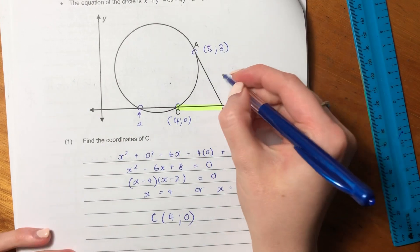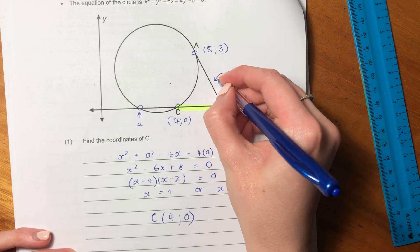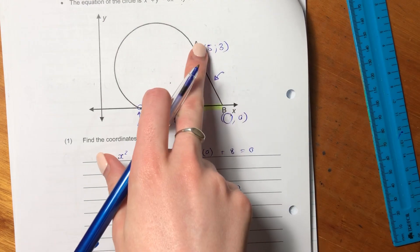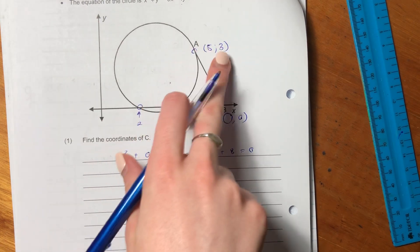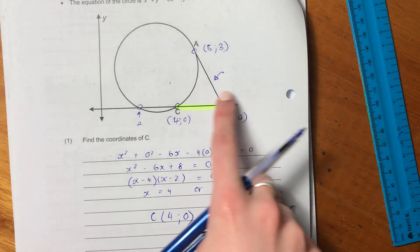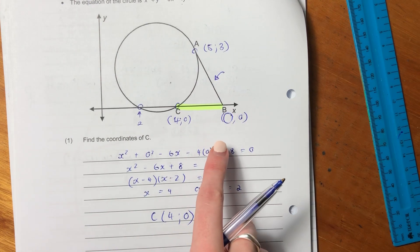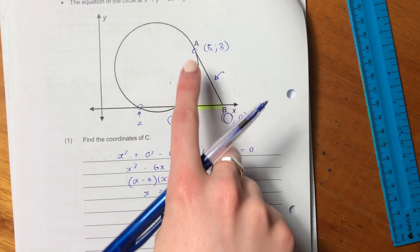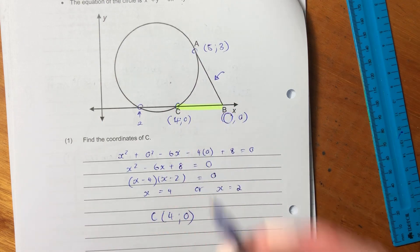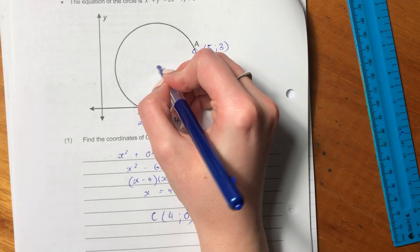Because if we find the x value for B, then we can just quickly find the length. So that's not a problem. So what we should do is we should try and find the equation of this line. Because we find the equation of this line, we can sub in A. We can use A to get the equation of that line, and then we can just find our point B.